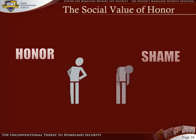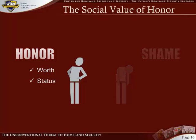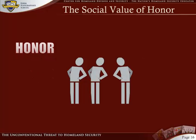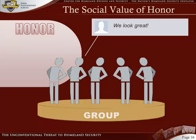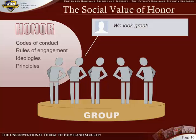Terrorist targets, therefore, tend to be highly symbolic or vulnerable, and an attack is meant to show the enemy's inability to defend itself and its people. Honor and its counterpart, shame, have a pivotal social value in strongly group-oriented environments. Honor is a socially acknowledged claim to worth and status, and can be either individual or collective, and the honor associated with the group reflects on its members and vice versa. In environments where honor is a central concern, there is a constant dialectic between the idealized norms of socially sanctioned speech and behavior and the way in which an individual or group seeks to reproduce those norms. In other words, codes of conduct, rules of engagement, and acting in accordance with the ideologies and principles of the group become matters of honor.